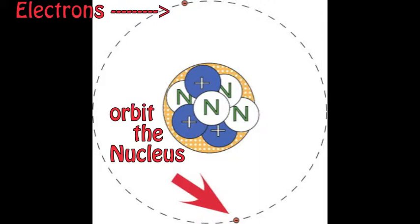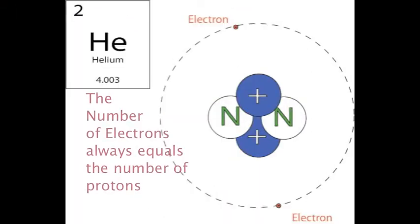The electrons orbit the nucleus at high velocity. The number of electrons equals the number of protons in the nucleus. Helium has two protons and therefore has two electrons.